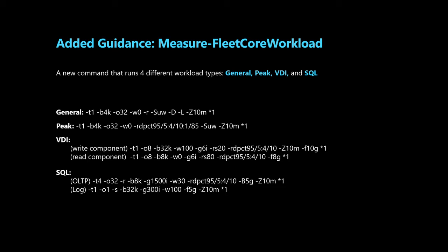Using the RDPCT parameter for VDI: 95% of the IO is sent to 5% of the target file, 4% of the IO to 10% of the target file, and 1% of IO to 85% of the target file — that last portion is implied if not explicitly specified. The Z parameter ensures we nerf the benefits from compression and dedupe to more fairly compare SSDs across companies, as some come with built-in compression. The last F parameter determines that we only use the first 10 gigabytes of the target file. For the read component, the parameters are similar but values differ — for example RS is 80, meaning 80% random and 20% sequential.